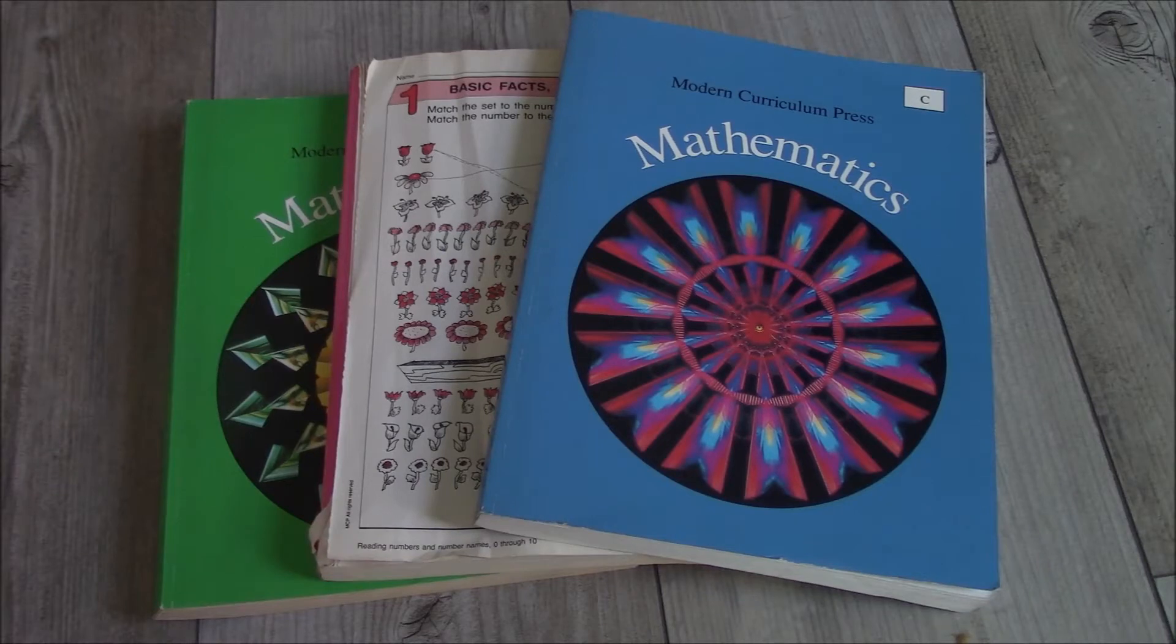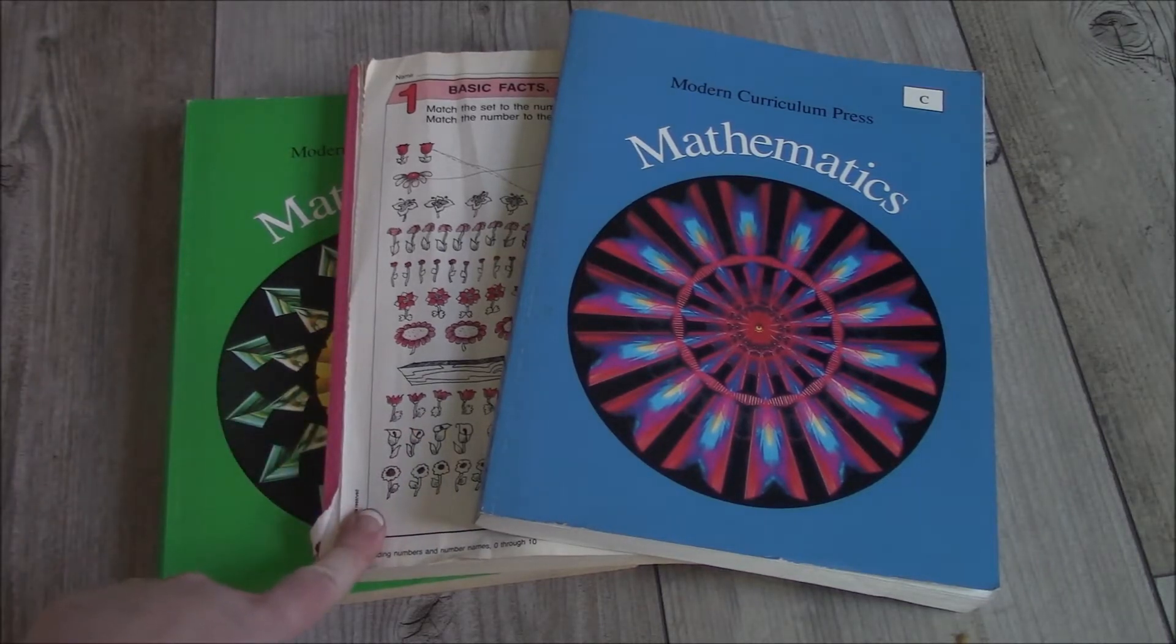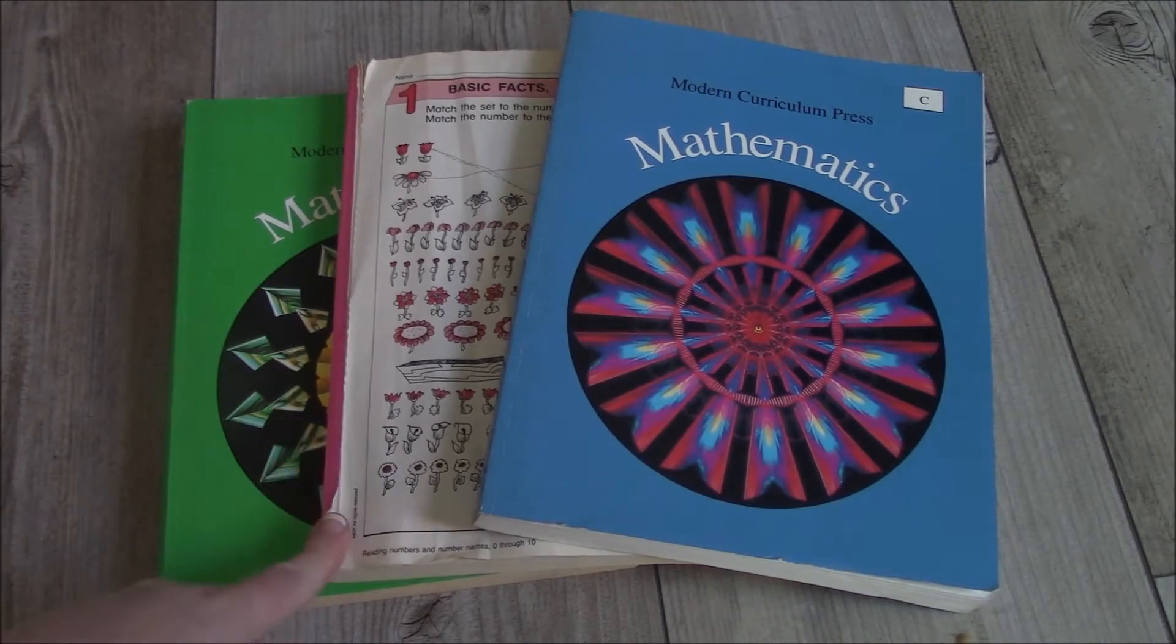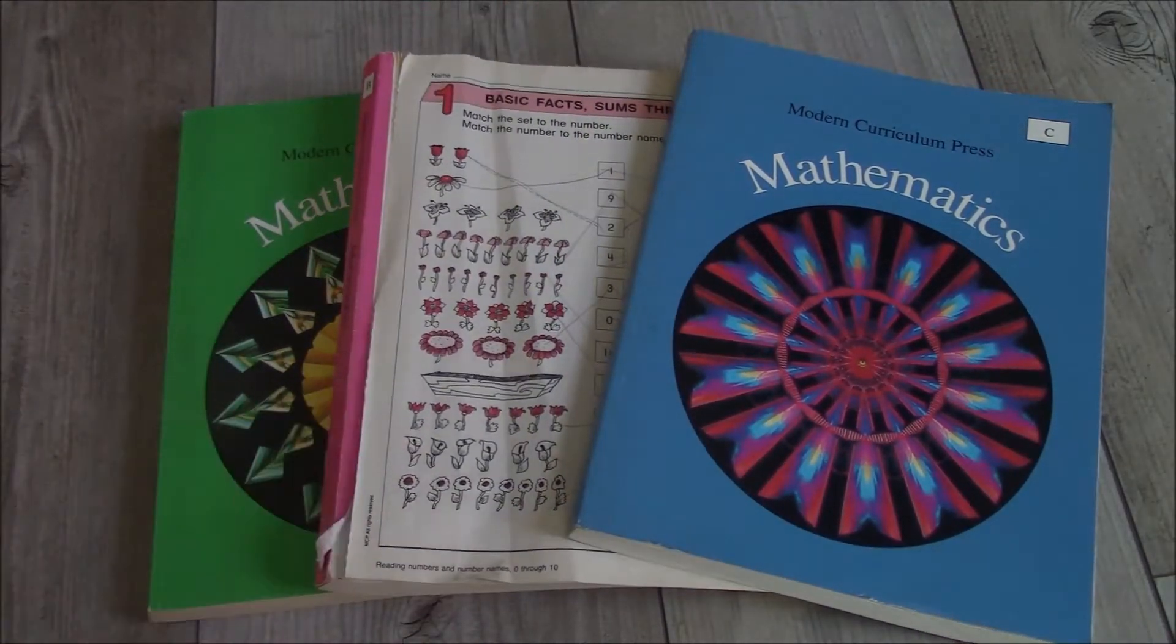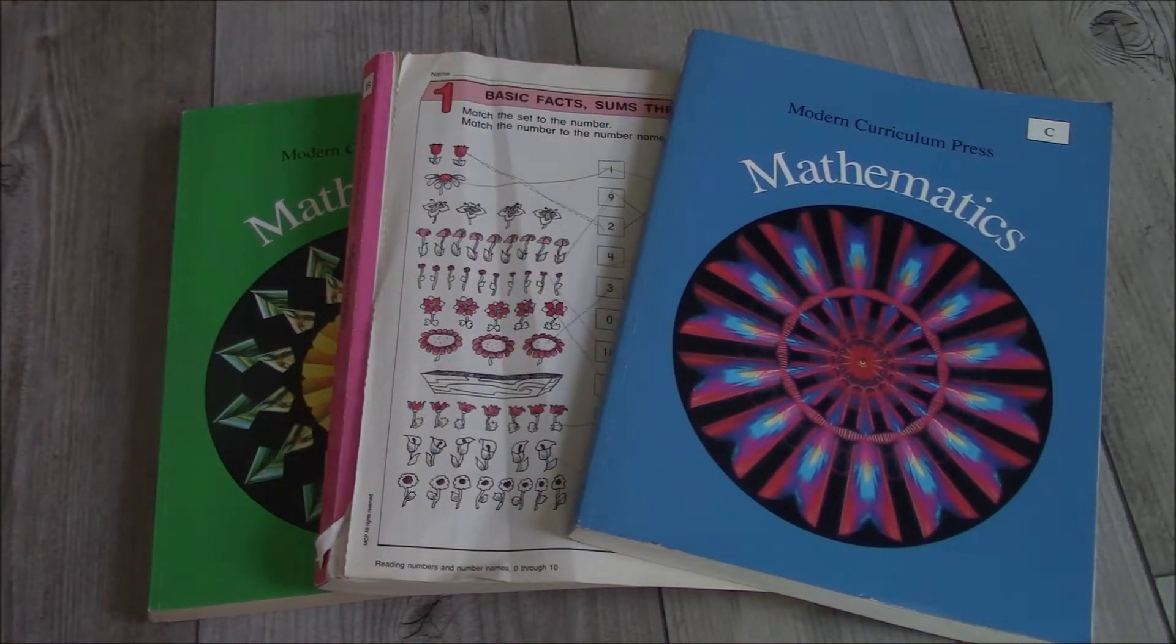The Rainbow Resources do have updated covers. And as you can see, the cover has come off of my daughter's math book, which is a pink color. So if you have kids that do not really care for the pink math book, the updated covers may be a good fit for you.